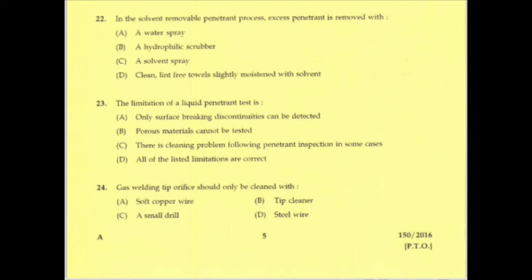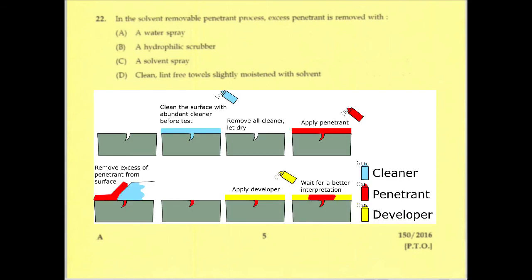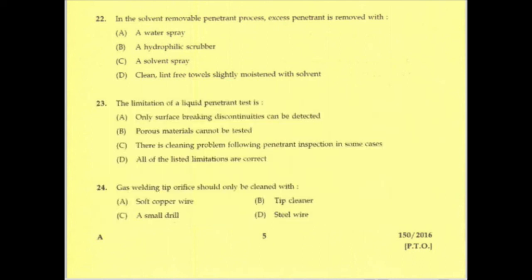In the solvent removable penetrant process, excess penetrant is removed with a solvent. This process is related to liquid penetrant testing, a type of non-destructive testing used in welding to identify cracks on the weld bead. The excess penetrant is removed with a clean, lint-free towel slightly moistened with solvent.